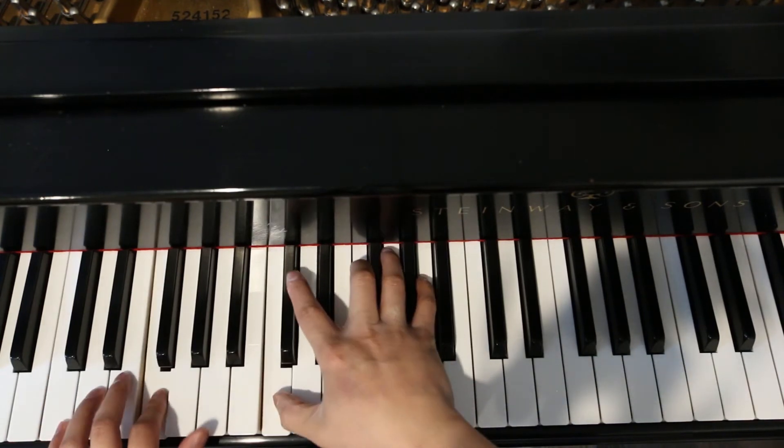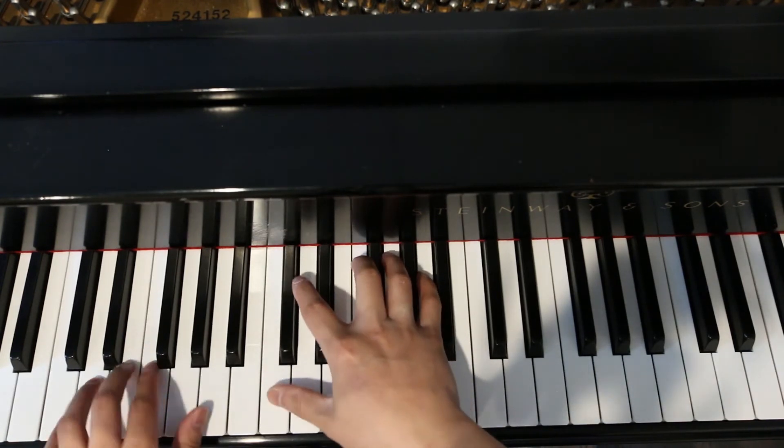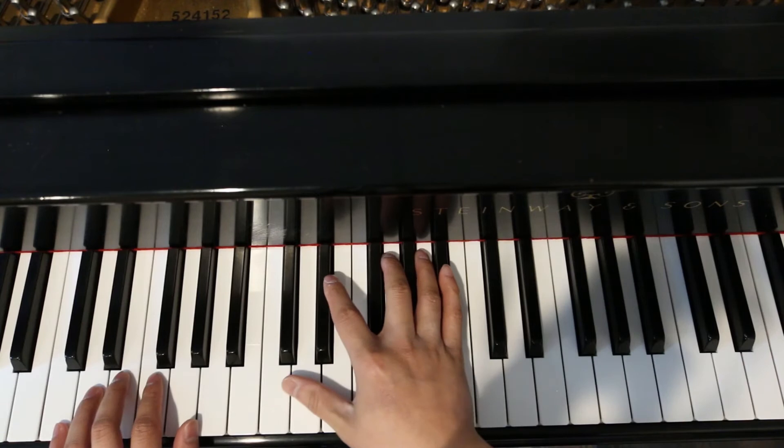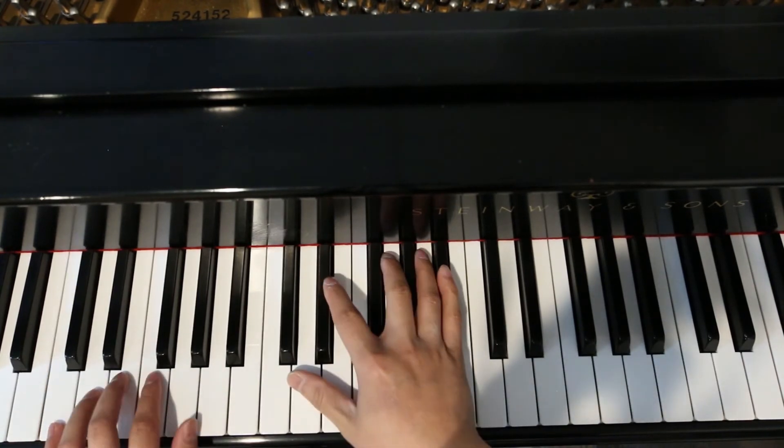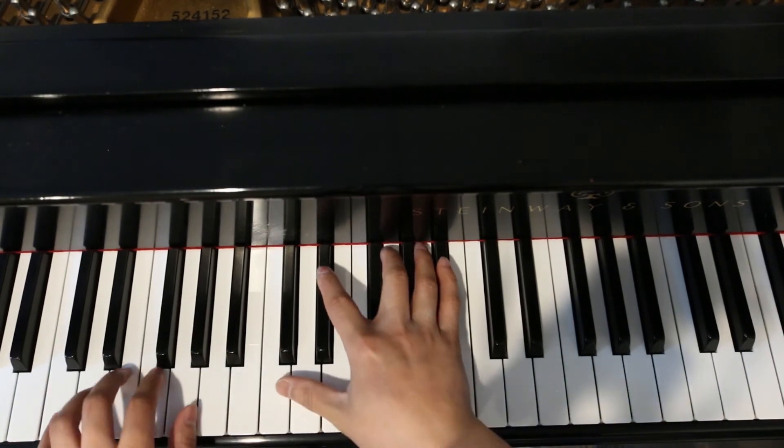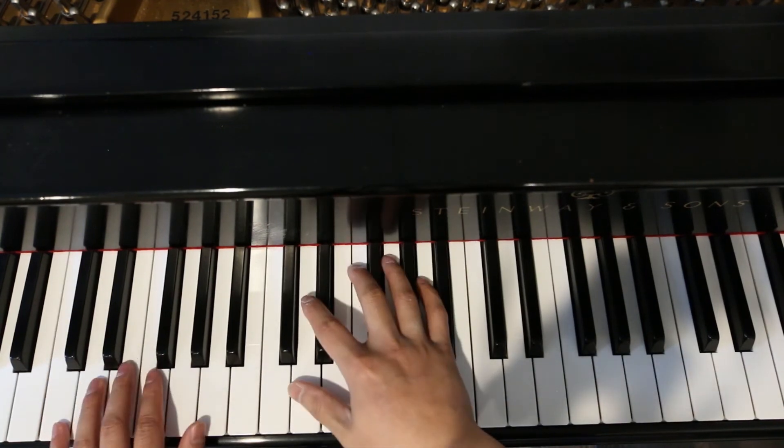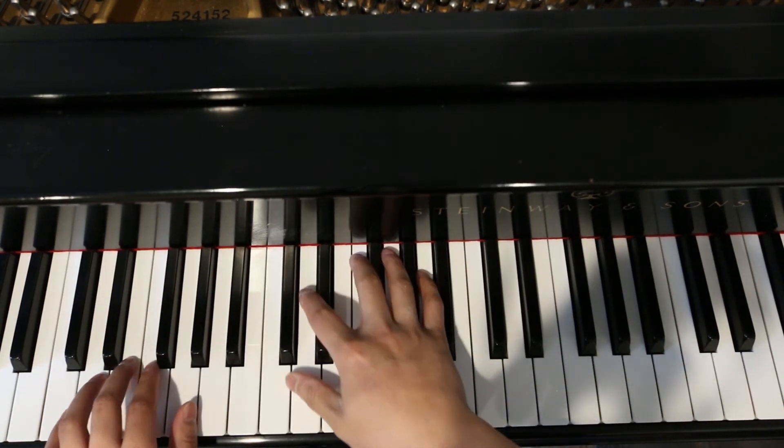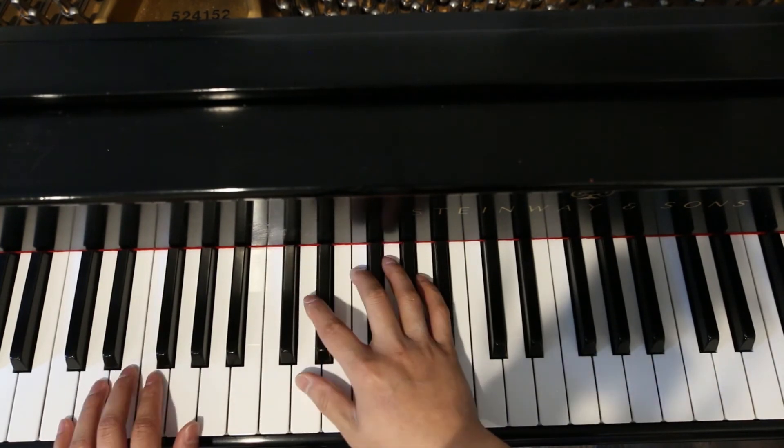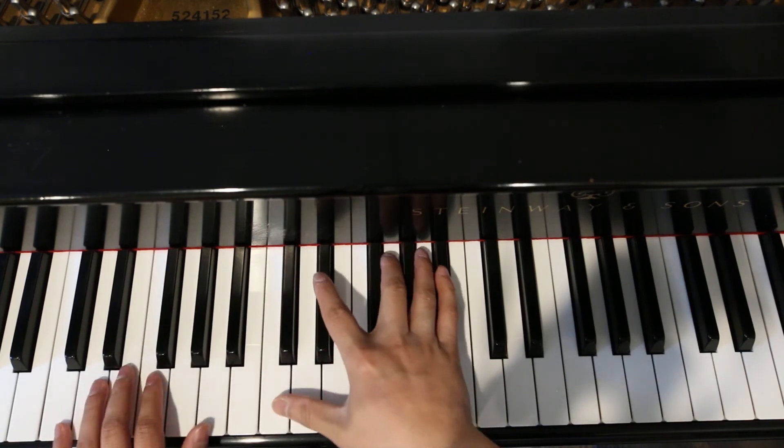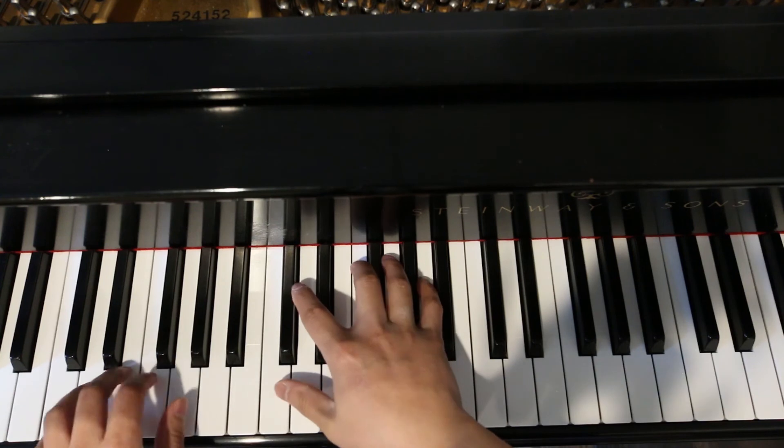So it goes like this. One, two, three, four, five, six. One, two, three, four, five, six. One, two, three, four, five, six. One, two, three, four. Back to one chord. One, two, three, four, five, six. One, two, three, four. Still one chord. One, two, three, four. Now V7. One, two, three, four. Back to one chord. One, two, three, four.